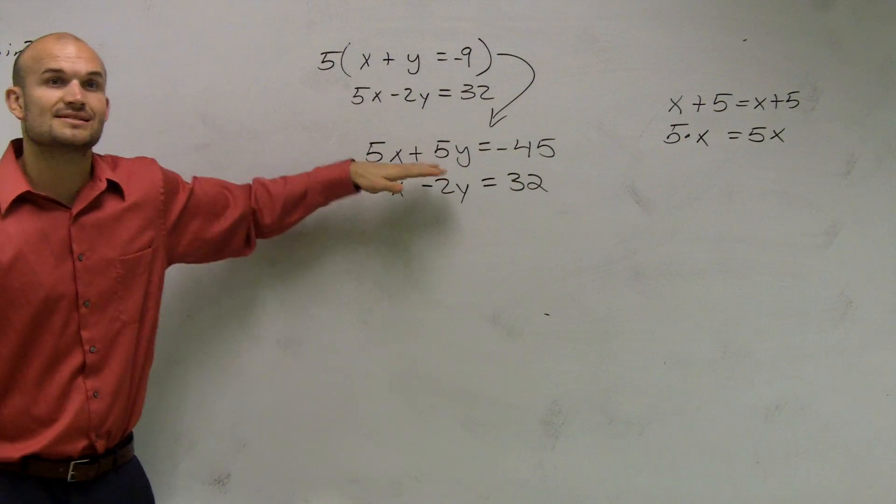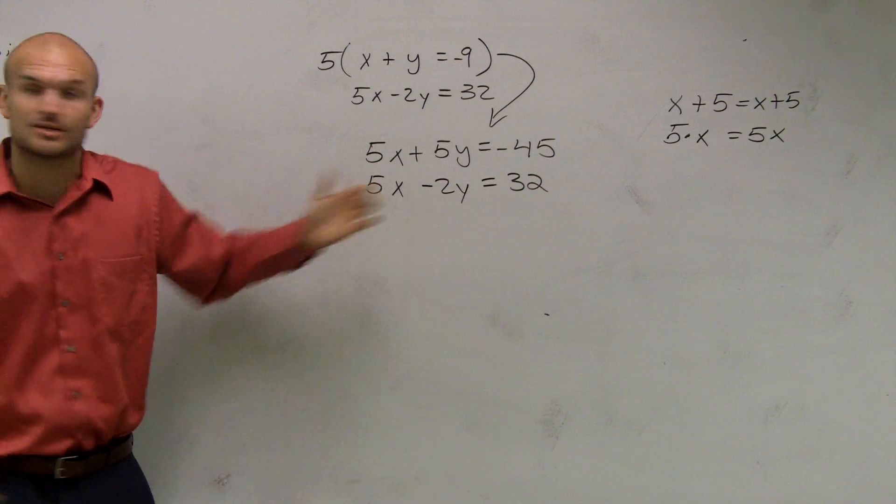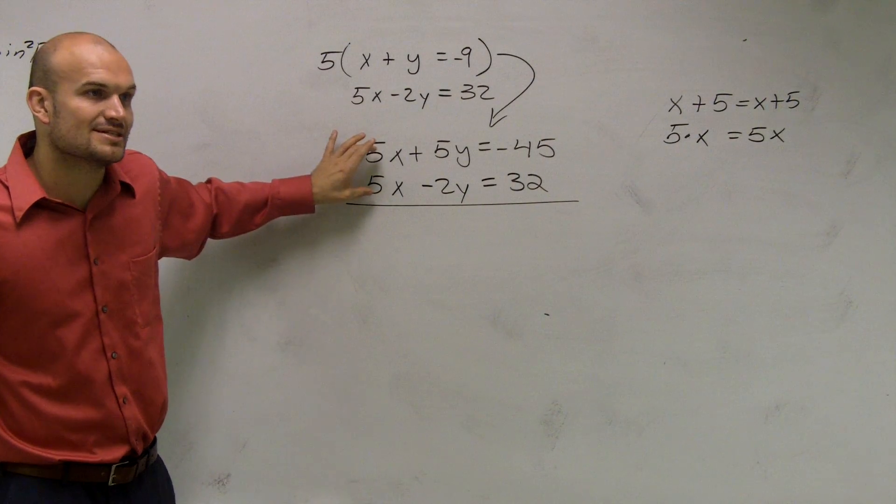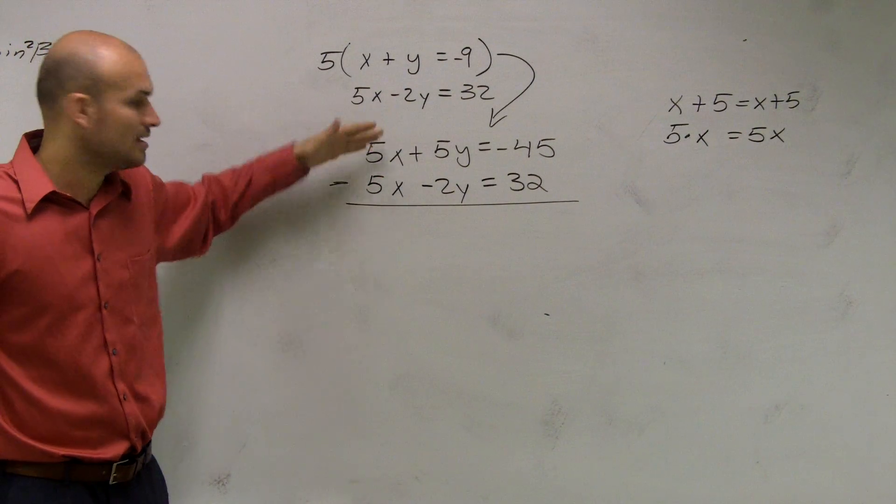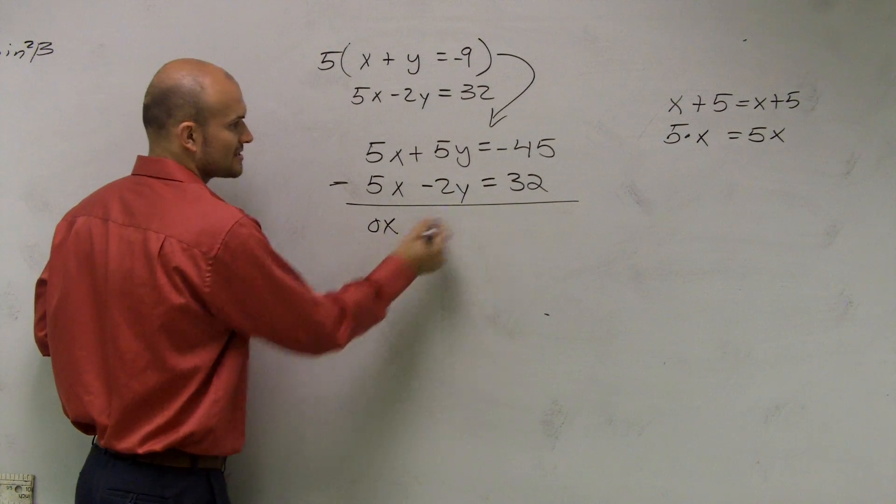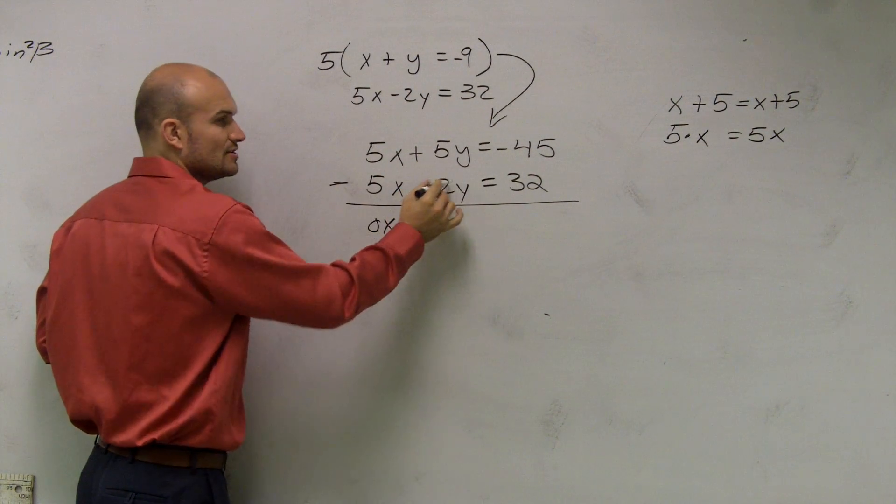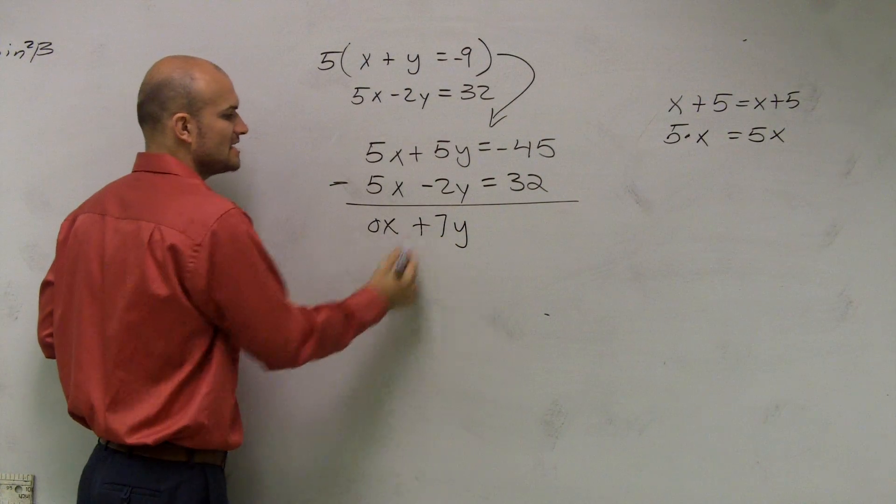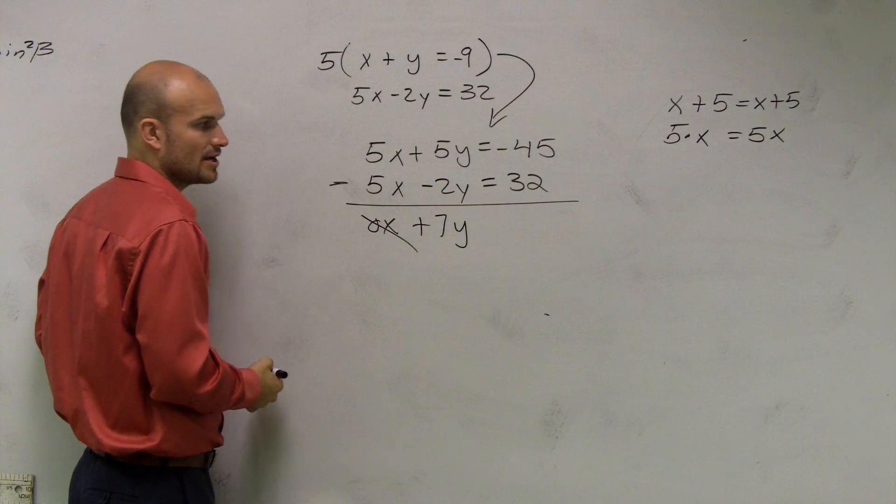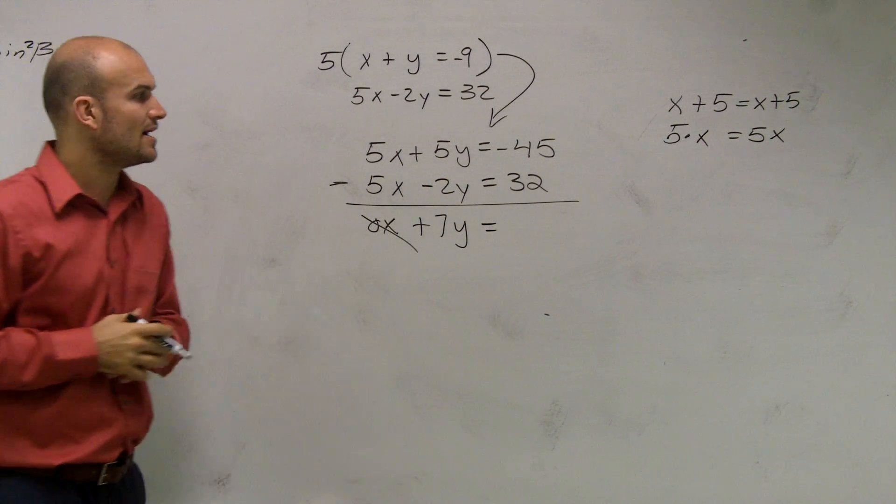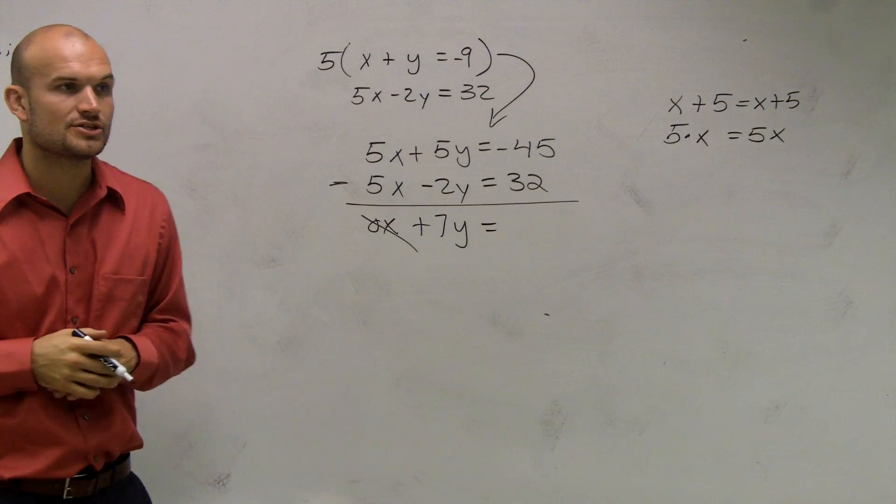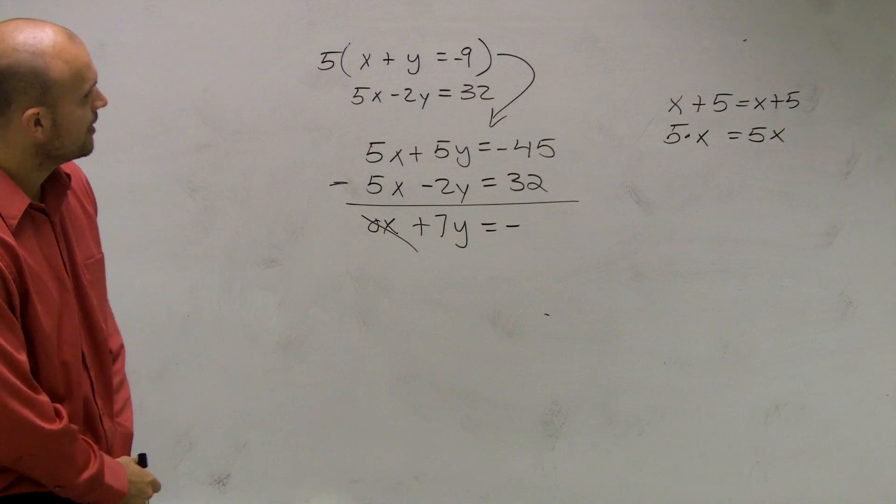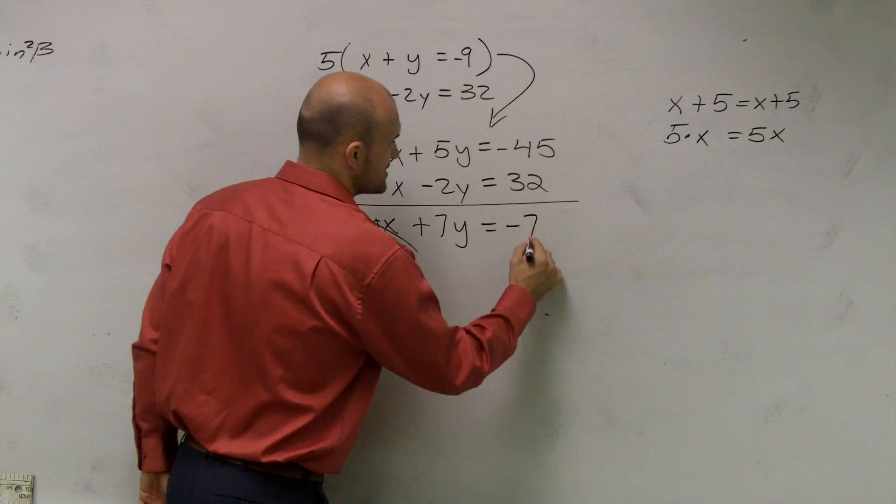When you guys look at this, now I can use my elimination. Because now I have coefficients that are exactly the same for the same variable. I subtract 5x minus 5x is zero x. 5y minus negative 2y, double negative, is going to give me positive 7y. Then I have negative forty-five minus negative thirty-two, which would be negative seventy-seven.